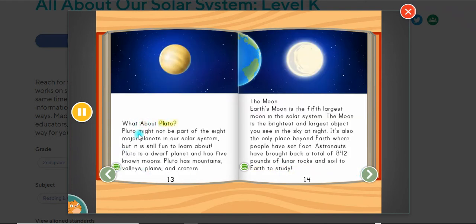What about Pluto? Pluto might not be part of the eight major planets in our solar system, but it is still fun to learn about. Pluto is a dwarf planet and has five known moons. Pluto has mountains, valleys, plains, and craters.